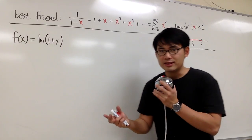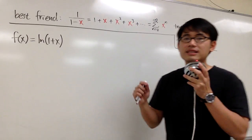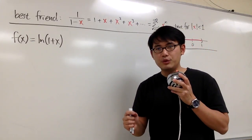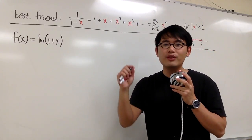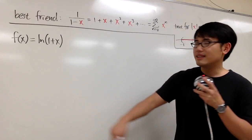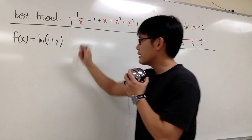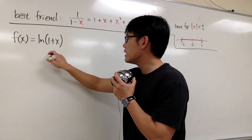So now let's reverse the process. Let's come up with a power series for 1 over 1+x first, and then integrate that, so we end up with the power series for ln(1+x).